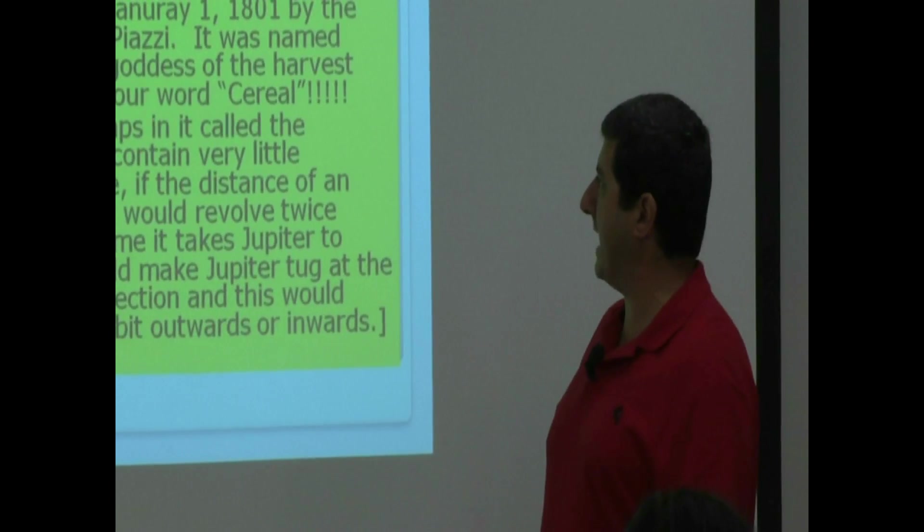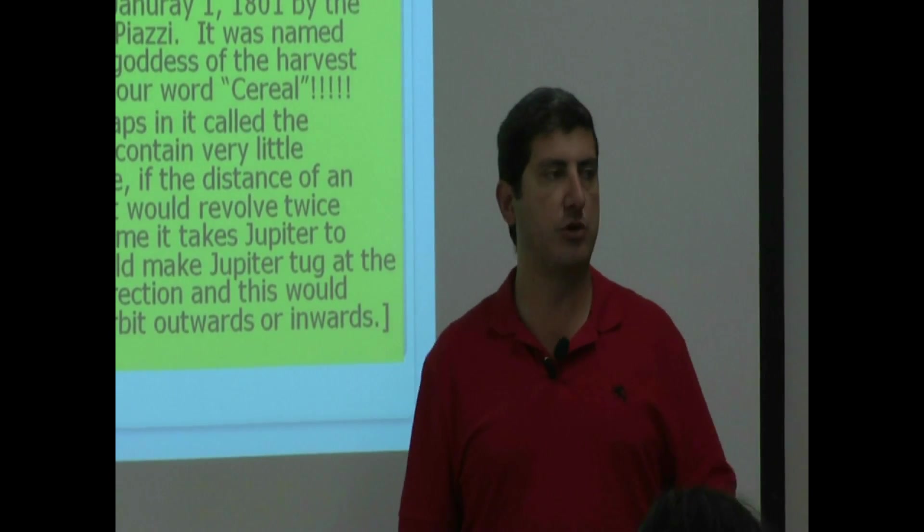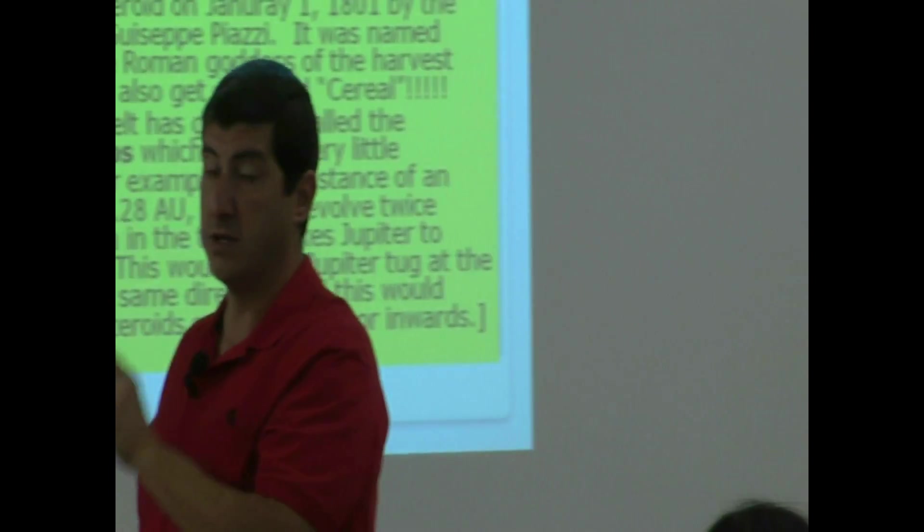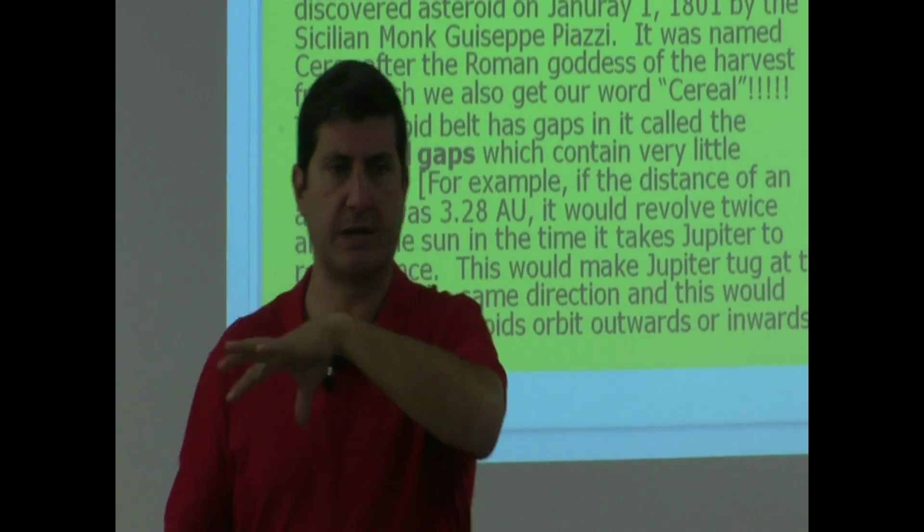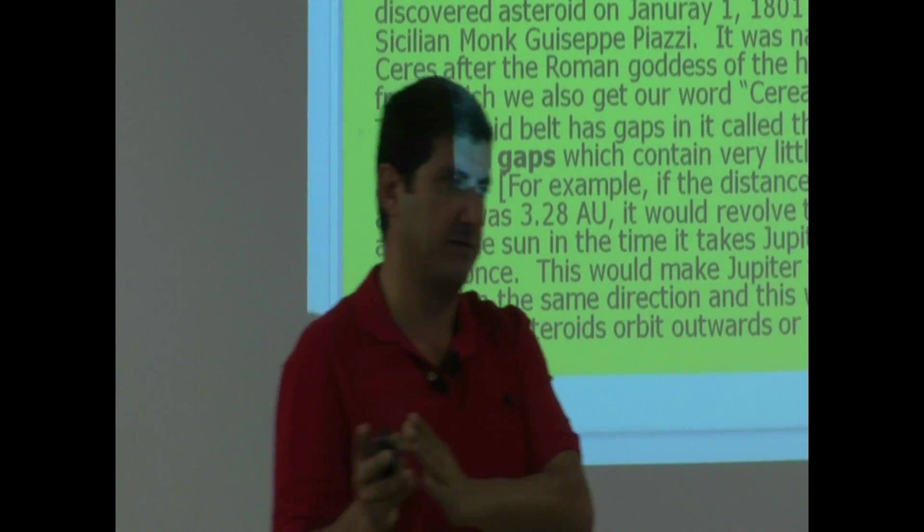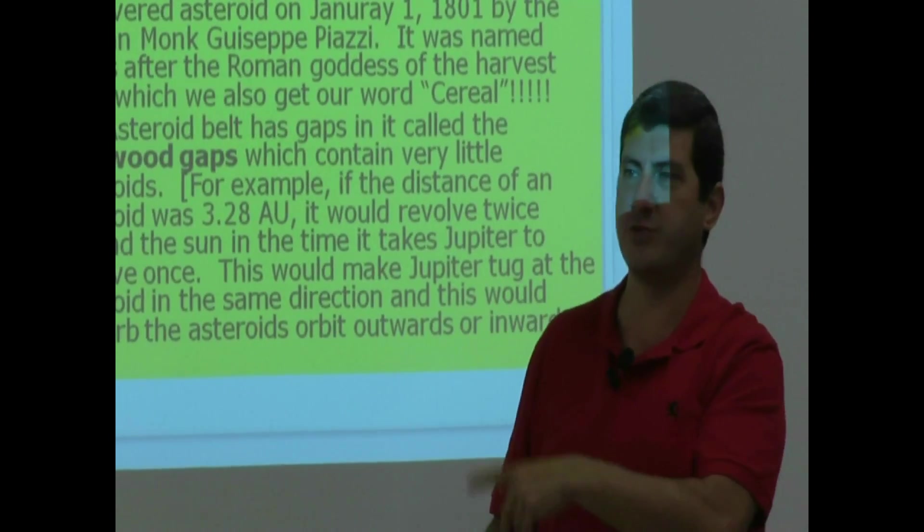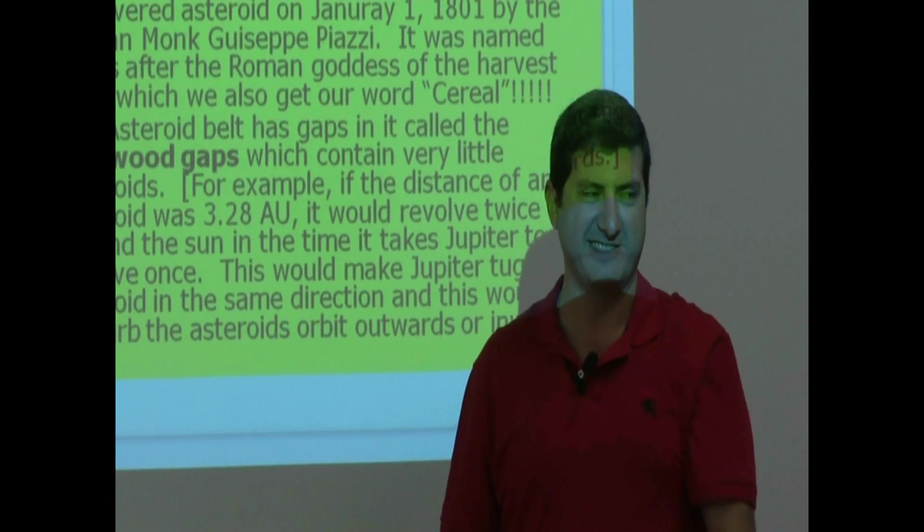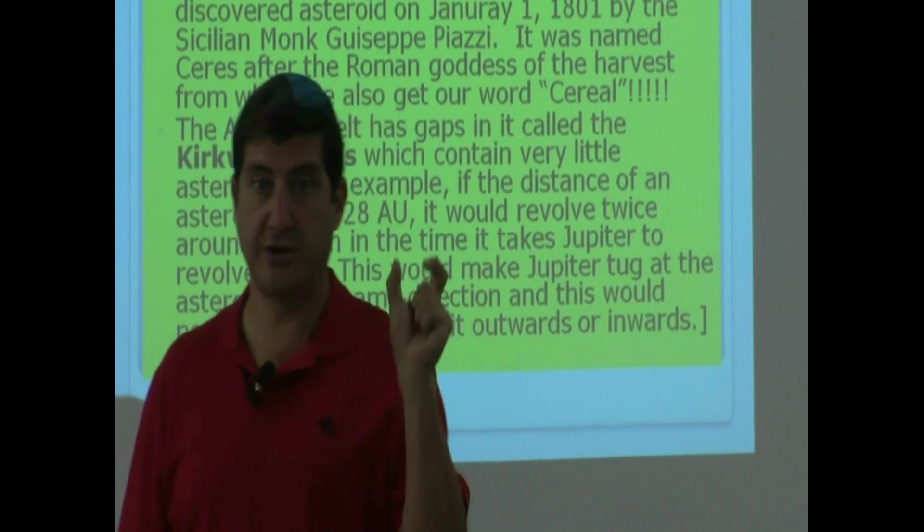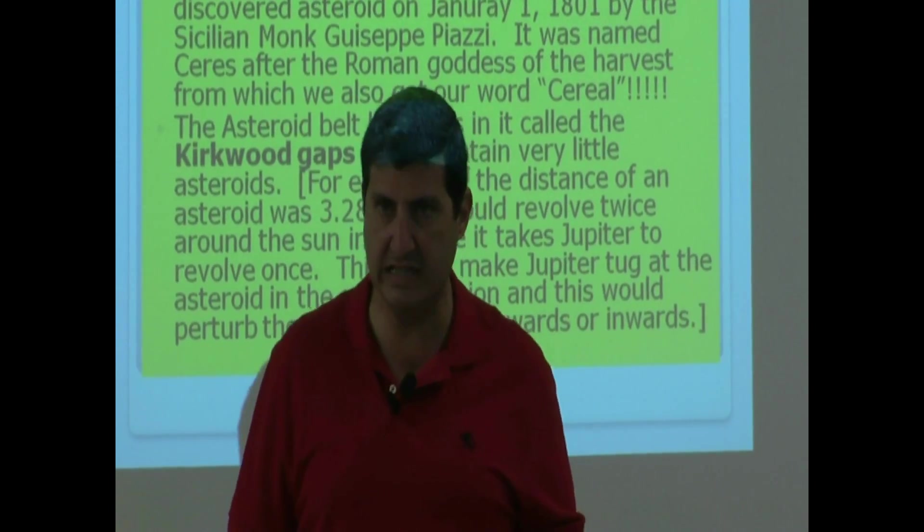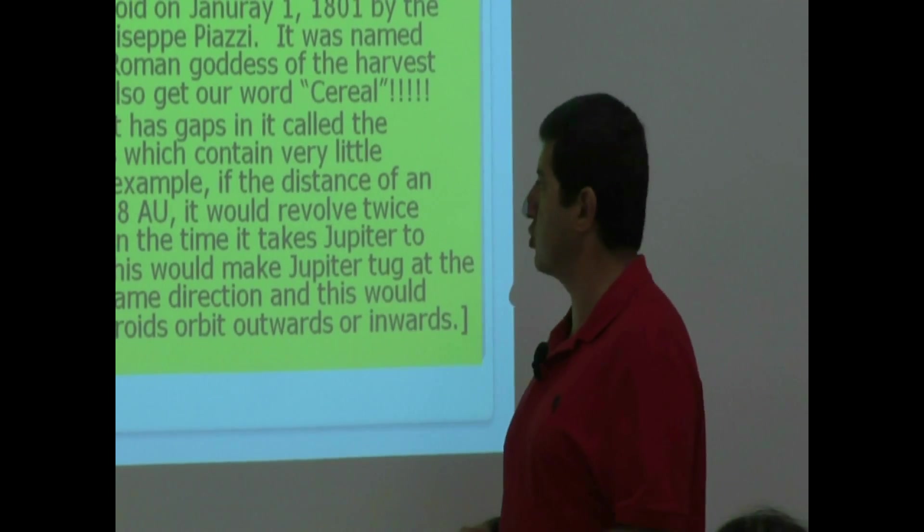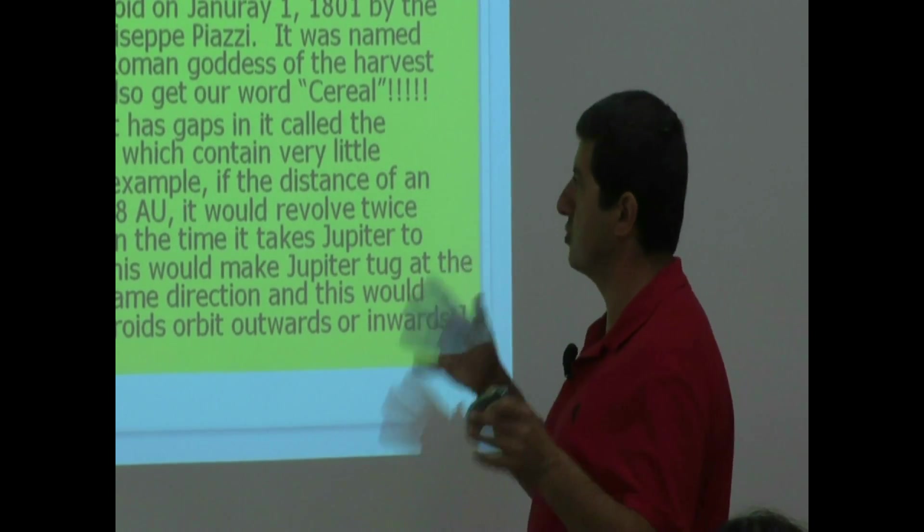The asteroid belt has gaps in it called the Kirkwood gaps. So, the asteroid belt is not completely solid filled with asteroids. There are certain gaps in there. Now, where have we seen this before? Where we've seen some objects, like rocky objects, and then we've noticed that there's gaps in there. We saw it the other day in the rings of, it starts with S, Saturn, right? They probably all have this feature. But Saturn's rings have a big gap in it called the Cassini division. This seems to be a general phenomenon. And so, the asteroid belt also has these gaps. And then those gaps are called Kirkwood gaps.